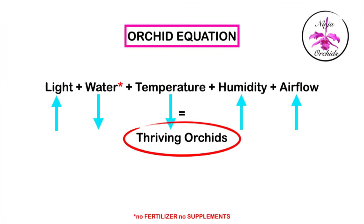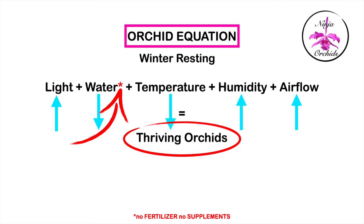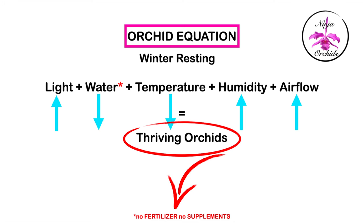There's also winter resting — in this instance the orchid equation changes for resting orchids during the winter. High light levels are still a factor, even if the day length may be shorter, because many winter resting orchids need high light, less water, lower temperature, higher humidity, and increased airflow. And when I say water, that includes a fertilizing and supplementing regime — they kind of go hand in hand, just to keep things a little more simple.